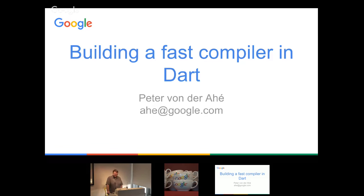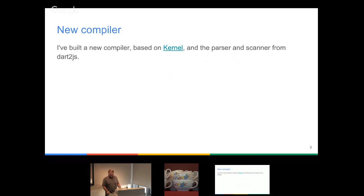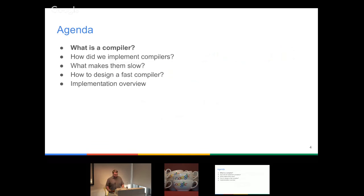I'm Peter and I have built a fast compiler in Dart. It's based on the kernel and the parser and scanner from Dart2JS. I'll be talking about this compiler today. First I'm going to give a brief introduction to what a compiler is. Then I'll discuss how we did implement compilers, and then philosophize over what makes them slow. Then try to use those ideas to come up with designs for a fast compiler, and at the end go into some implementation details of this new compiler.